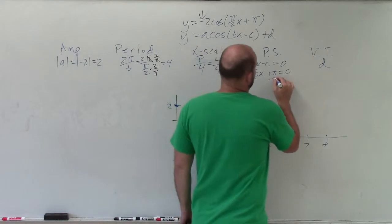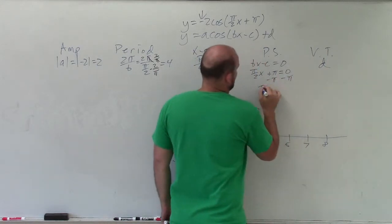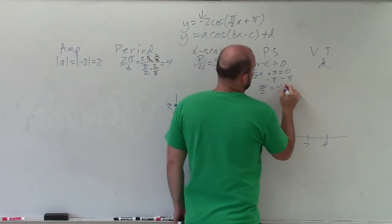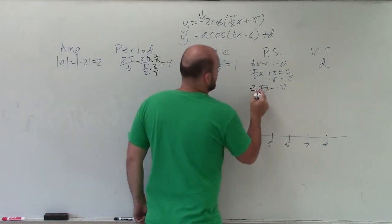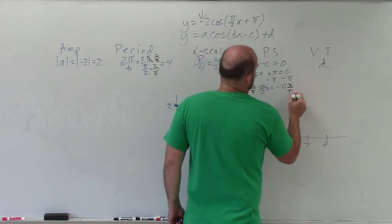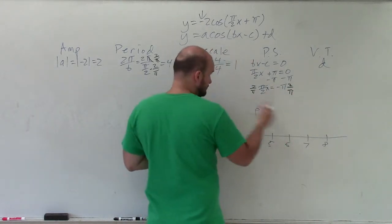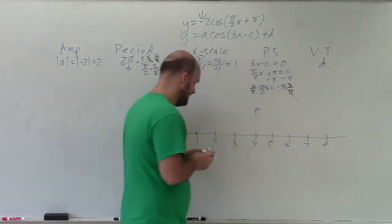So to do this, I need to take pi over 2x plus pi equals 0 and now solve for 0. So to do that, I'll subtract pi. And I have pi halves equals negative pi, negative pi x. Again, I need to multiply by the reciprocal. 2 over pi, 2 over pi.